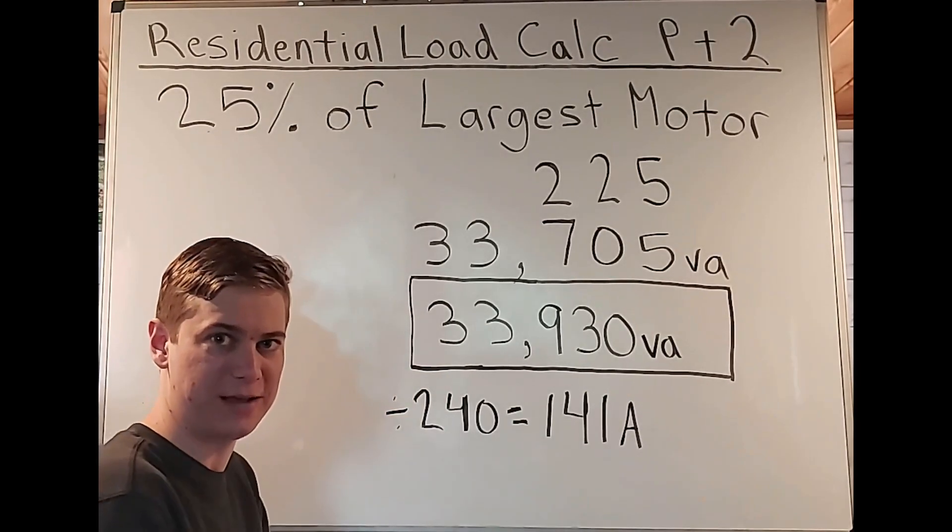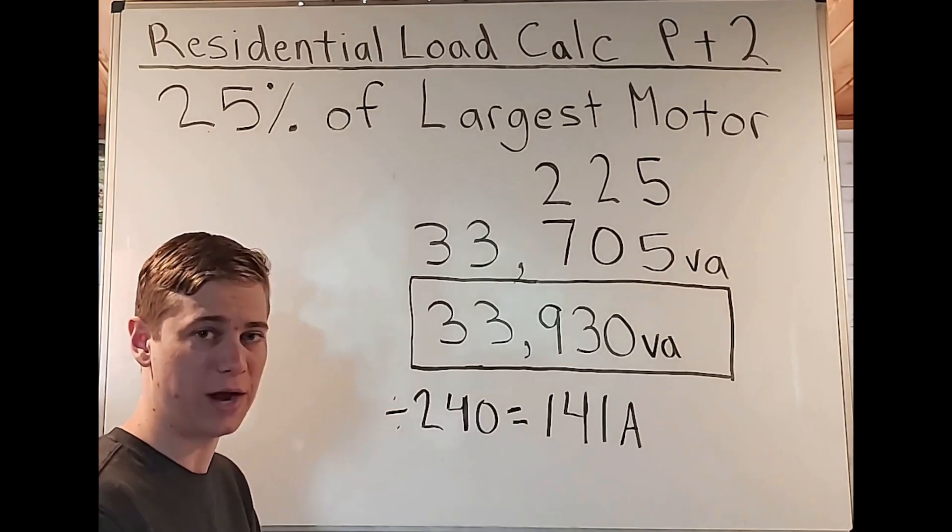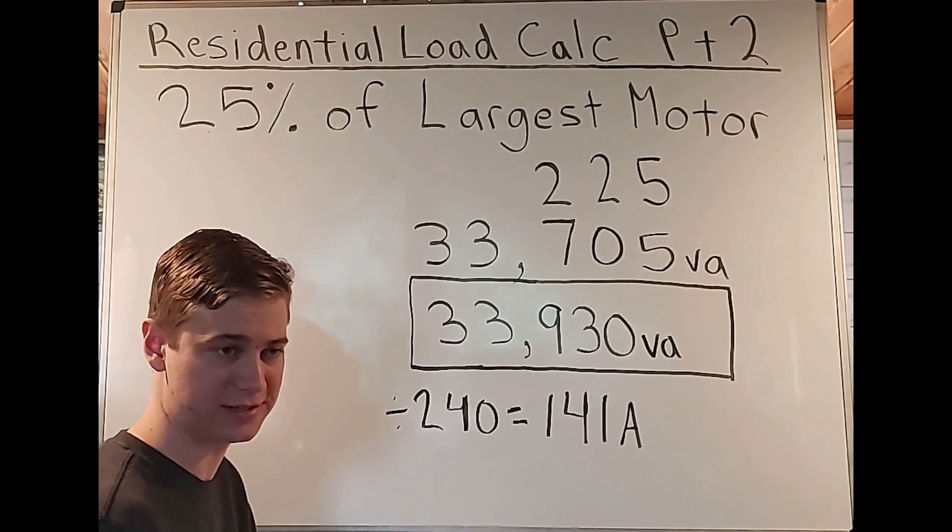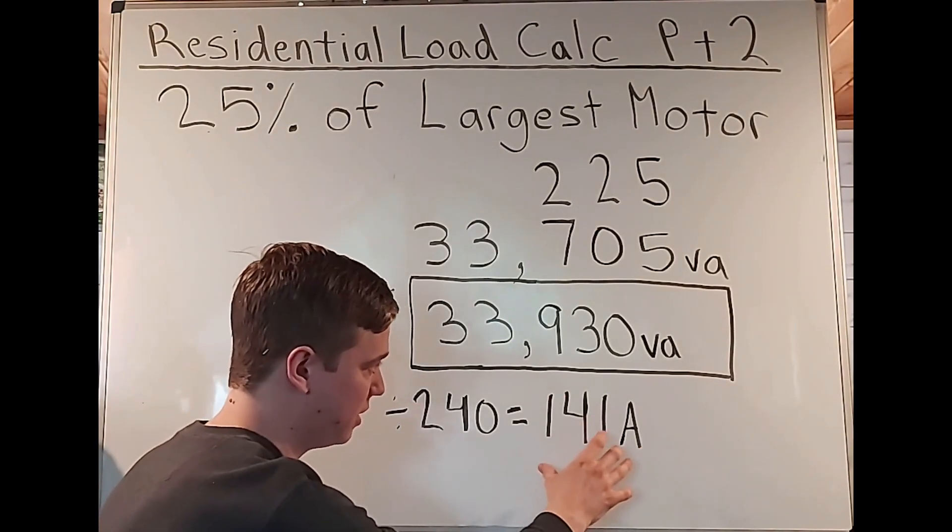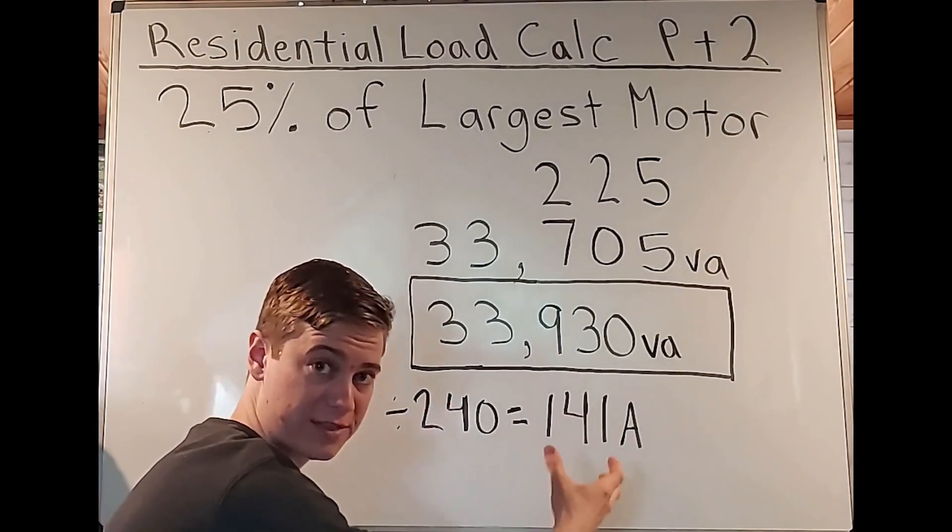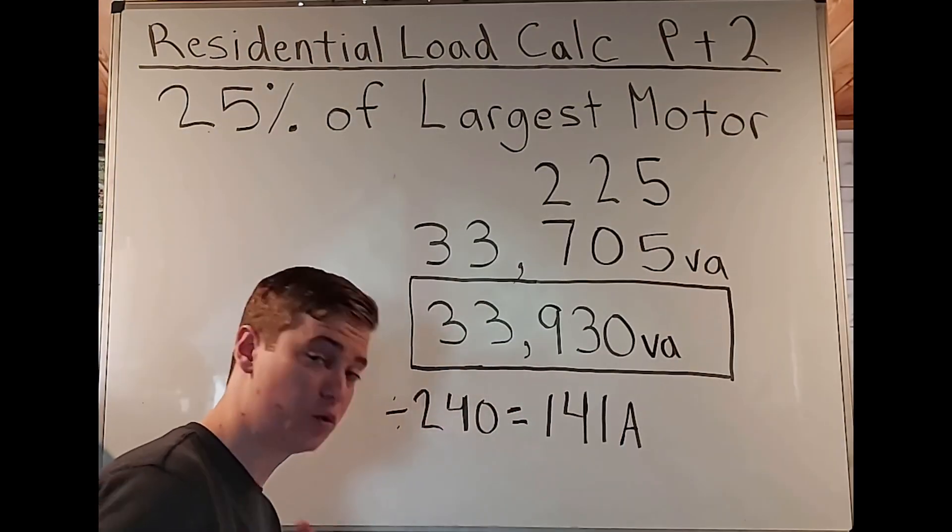So logically speaking, we'd probably size down. But the thing is, if you've done this enough times, you know that you normally size up. Now we have to ask ourself, why are we sizing up? If we're looking for an overcurrent protection device, this is supposed to be protecting us from overcurrent. So we should probably size to the current that we have and not more than that.